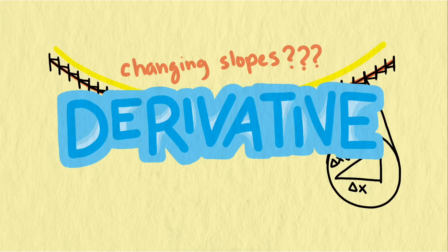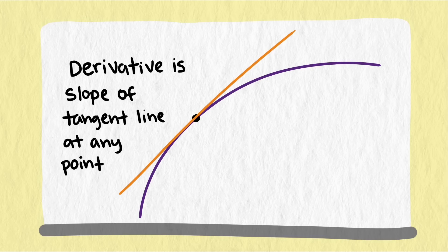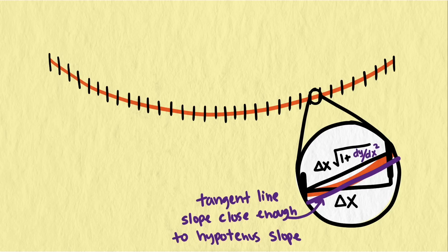Well, we can use the derivative. One way to interpret the derivative of a function at a point is the slope of the tangent line at that point. So we can use the derivative to estimate the slope of the hypotenuse line segments, and we can rewrite our scale factor as the square root of 1 plus dy/dx squared, or f prime of x squared.